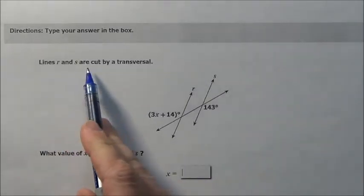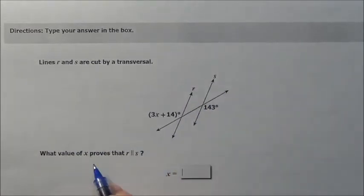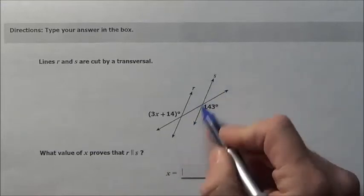It says lines R and S are cut by a transversal. So here's R and S and they're cut by this line right here. What value of X proves that these are parallel?